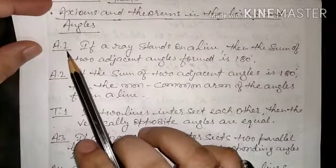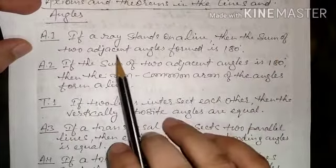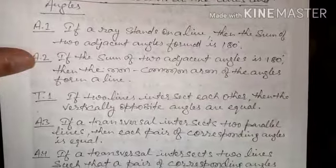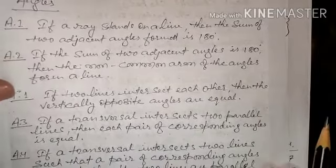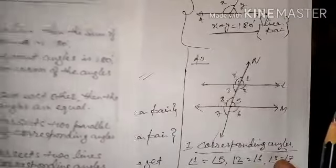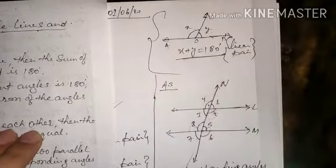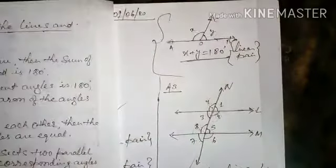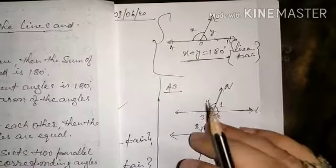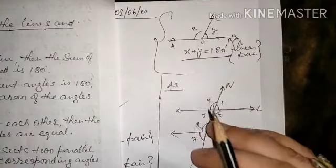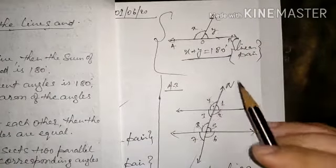So let us start with the axioms first. Axiom 1: if a ray stands on a line, then the sum of the two adjacent angles formed is 180 degrees. Since we know that axioms do not need any proof, we are not going to prove the axioms. With the help of axioms we are going to prove the theorems, and with the help of already proved theorems we use their truth to prove other theorems.